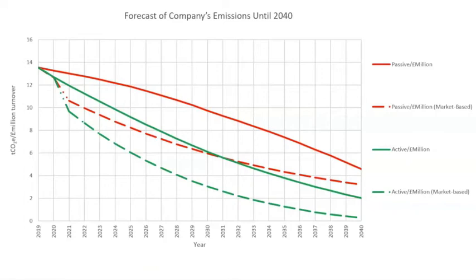To use the graph in the future as you're going along, you will have to convert your emissions into tonnes of CO2e per million pound turnover. This is to account for any growth in your company.